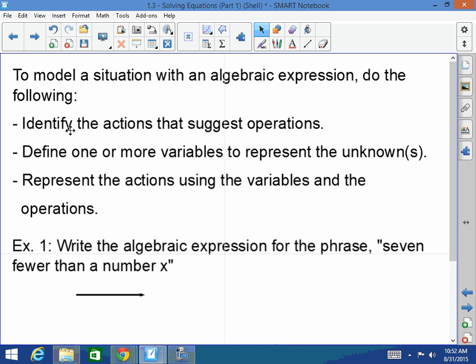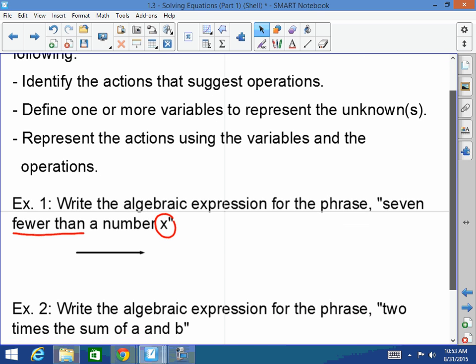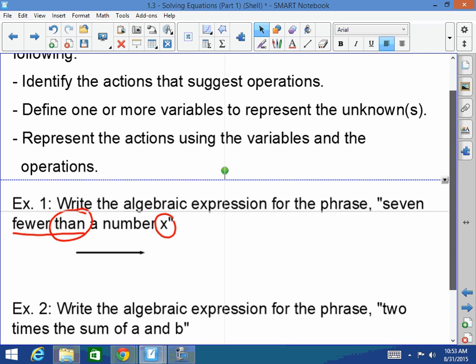For example, write the algebraic expression for the phrase, 7 fewer than a number X. First of all, fewer than, what does fewer than indicate? It's a subtraction. Exactly. And what variable am I dealing with? I'm dealing with X. So how do you think I would represent 7 fewer than a number X? Wrong. But it's fewer than. Remember what this, fewer than, remember we switched. Good job. So this would be X minus 7 in this case, because it's like a less than.